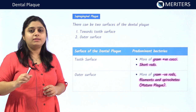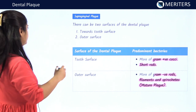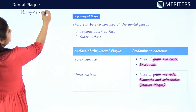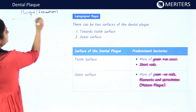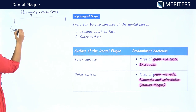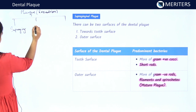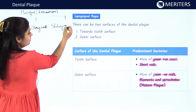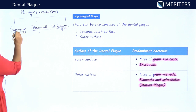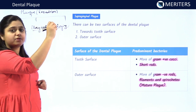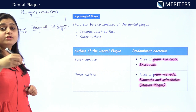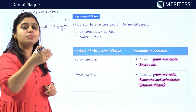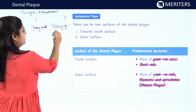Let us discuss the three types of dental plaque based on location: supra-gingival plaque, marginal plaque, and sub-gingival plaque. Supra-gingival is the plaque present above the gingival margin. The plaque at the level of the gingival margin is known as marginal plaque. The plaque present below the gingival margin, or in the sulcus or periodontal pocket, is known as sub-gingival plaque.